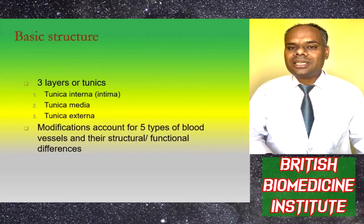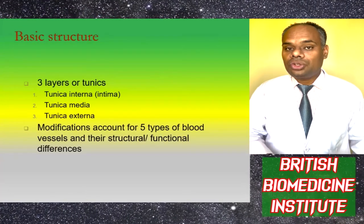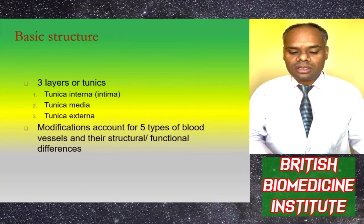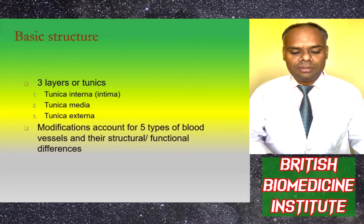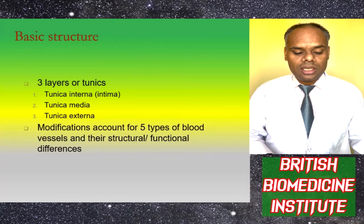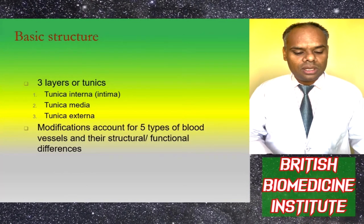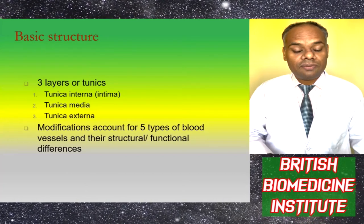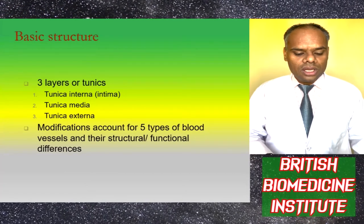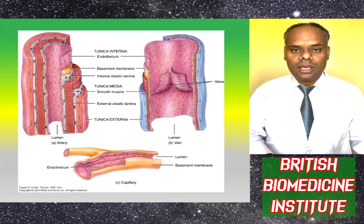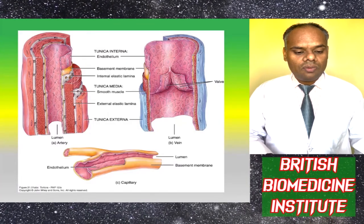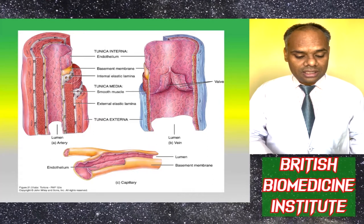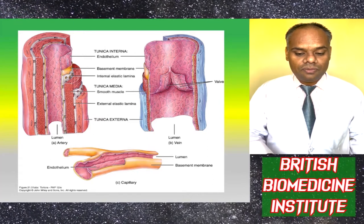The basic structure has three layers or tunics: tunica interna, basically called intima, tunica media, and tunica externa. These modifications account for the five types of blood vessels and their structural and functional differences. This diagram of a vein shows all three layers: tunica interna, tunica media, and tunica externa.